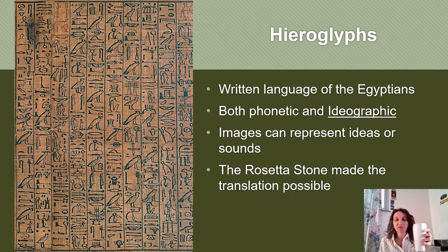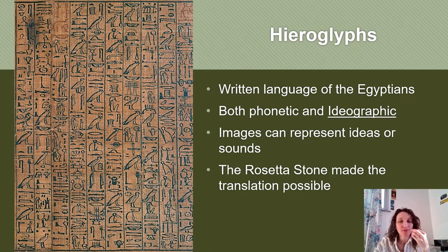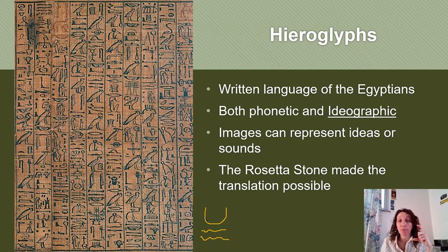First we'll talk about hieroglyphics — the written language of the ancient Egyptians. This is the second language we've discussed; the first was cuneiform from Mesopotamia. Hieroglyphics are both phonetic, meaning sounds, and ideographic, meaning an image representing an idea. Let me give you an example of how difficult it was to translate this language — I learned this from a linguistics professor in college. The rough hieroglyphic for 'boat' kind of looks like a little boat with waves underneath, which makes sense.